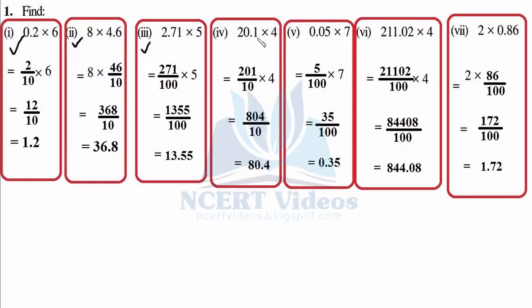Fourth problem: 20.1 × 4. Write 201 as it is, decimal with 1, number of digits is 1, so divided by 10 into 4. Now 4 ones are 4, 4 zeros are 0 — any number multiplied with 0 gives you 0. Now 4 × 2 is 8, upon 10. Writing number as it is, counting number of zeros is 1, therefore placing after one digit towards the left-hand side.